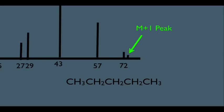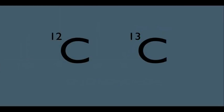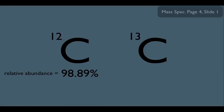How are we getting this heavier peak? It goes back to general chemistry. Carbon comes in two isotopes: carbon-12 and carbon-13. From general chemistry, the relative abundance of these two isotopes is 98.89% to 1.11%. If you had a bunch of carbon atoms, 98% of them would weigh 12, and about 1.1% would weigh 13 — hence the term relative abundance.